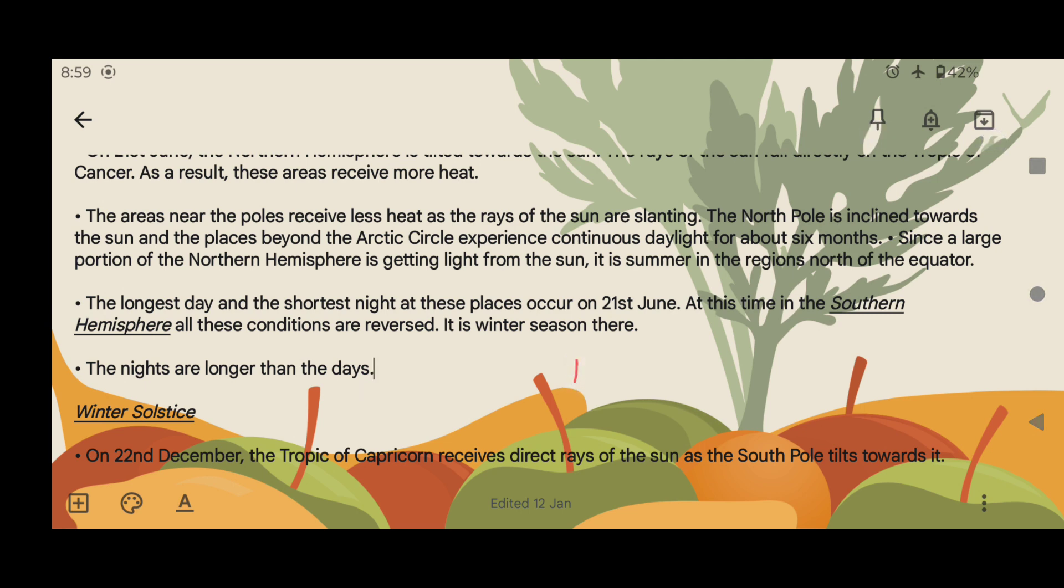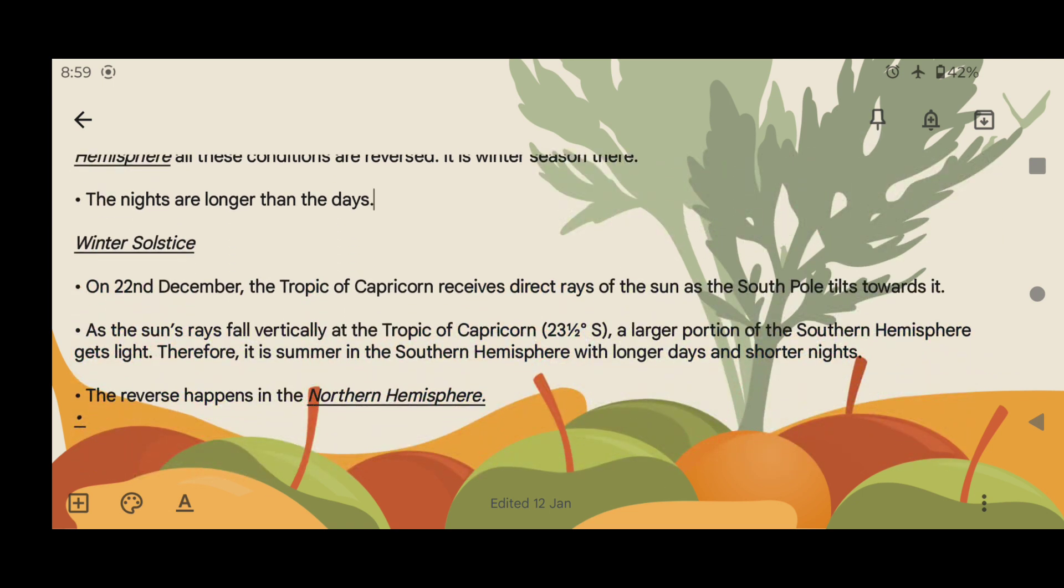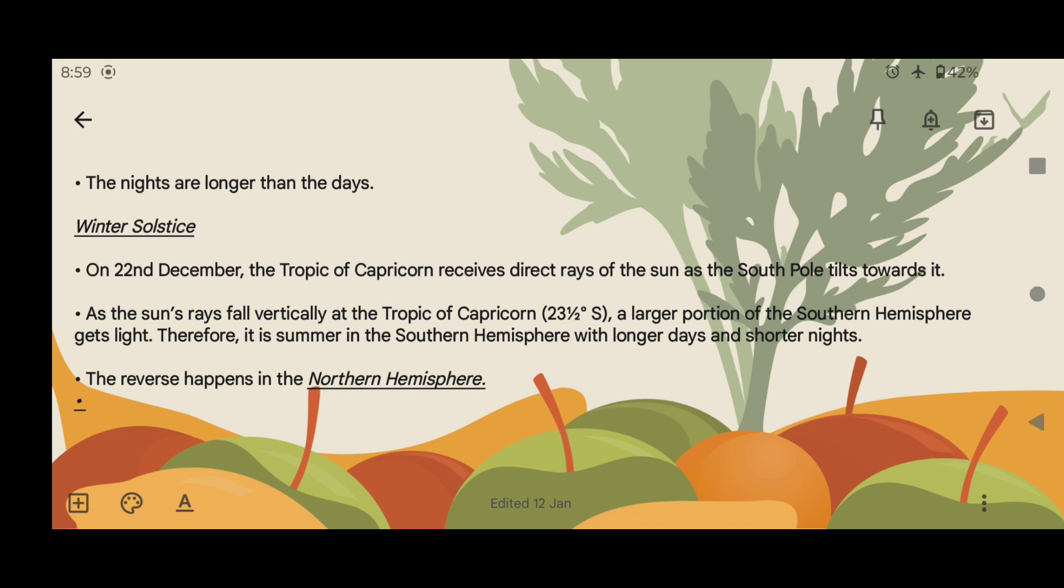Winter solstice: On 22nd December, the Tropic of Capricorn receives direct rays of the sun as the south pole tilts toward it. As the sun rays fall vertically at the Tropic of Capricorn 23.5 degrees south, a large portion of the southern hemisphere gets light. Therefore, it is summer in the southern hemisphere with longer days and shorter nights. The reverse happens in the northern hemisphere.